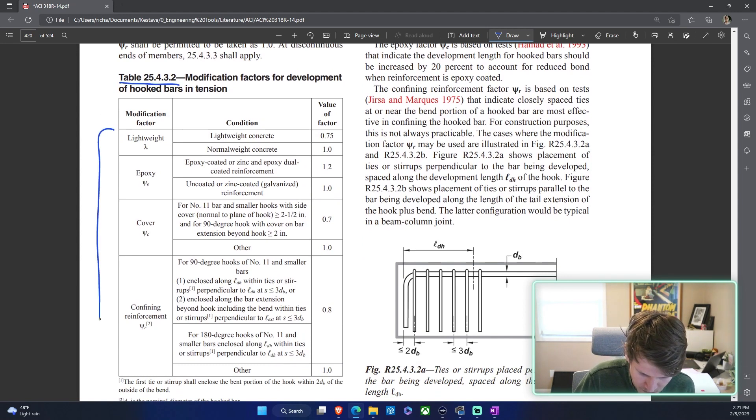It's literally the next page and it's this beautiful table here. They have everything that you need. First of all, we have our lambda, and this is just normal weight or lightweight concrete. I said in today's example it's normal weight concrete - you ain't making a retaining wall with lightweight concrete. It's normal weight today, 1.0, easy. Psi_e, this symbol, is based on the coating of your reinforcement. We're uncoated so we're 1.0 also, easy.